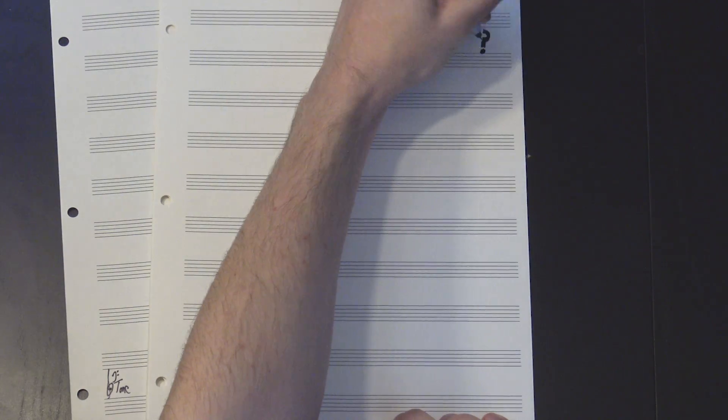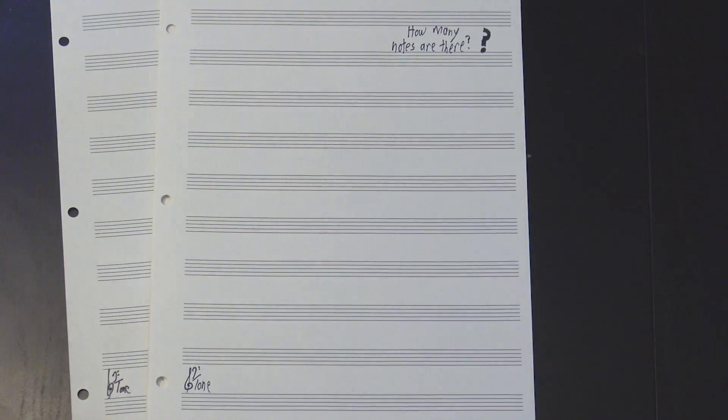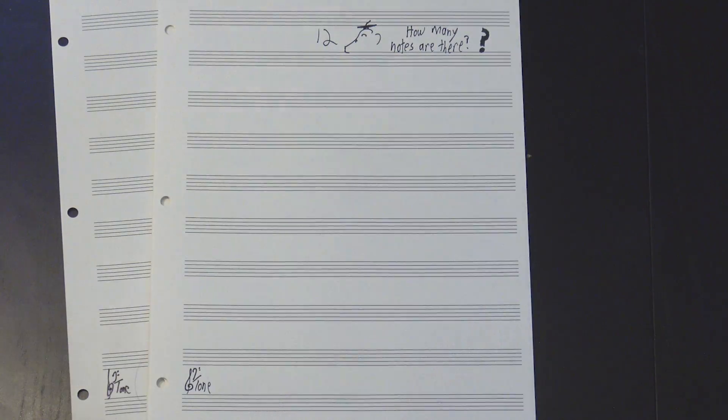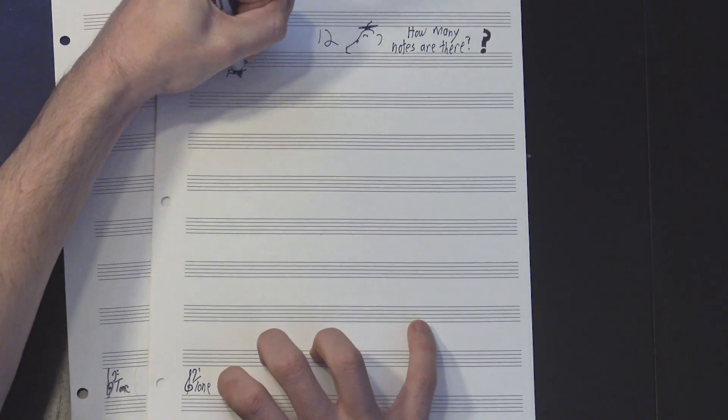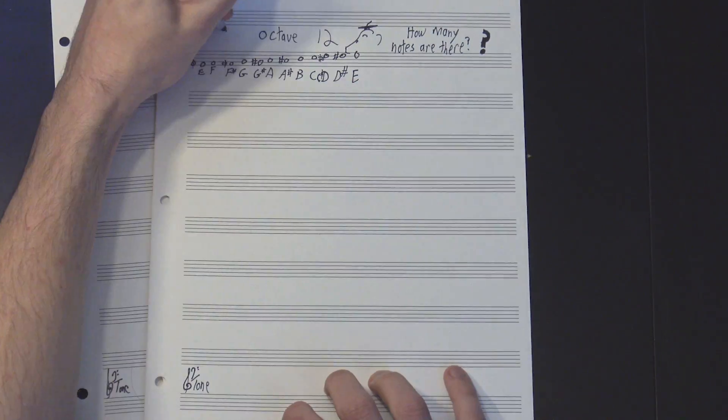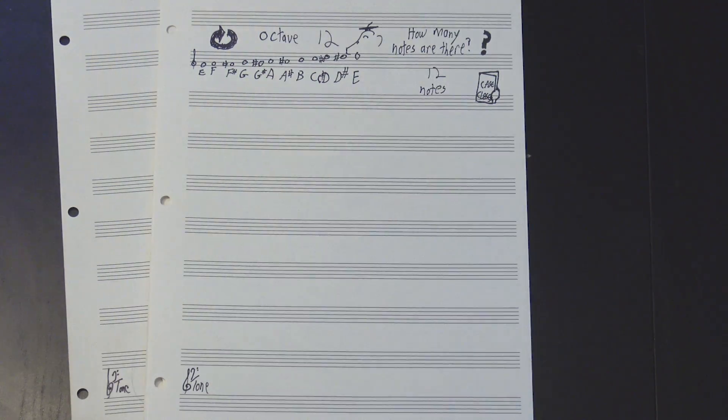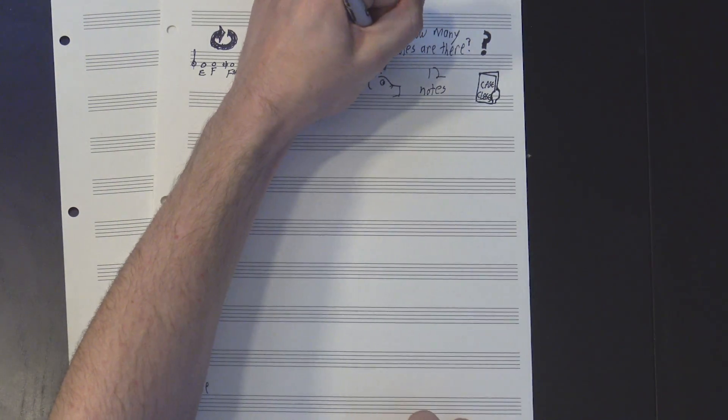Hey, welcome to 12tone! Let me ask you something. How many different notes are there? It's a simple enough question. Any music student could tell you that there's 12. Specifically, there's these 12, after which we reach the octave and start the cycle all over again. So cool, case closed, there are 12 notes. But, well, that's a little weird, isn't it?